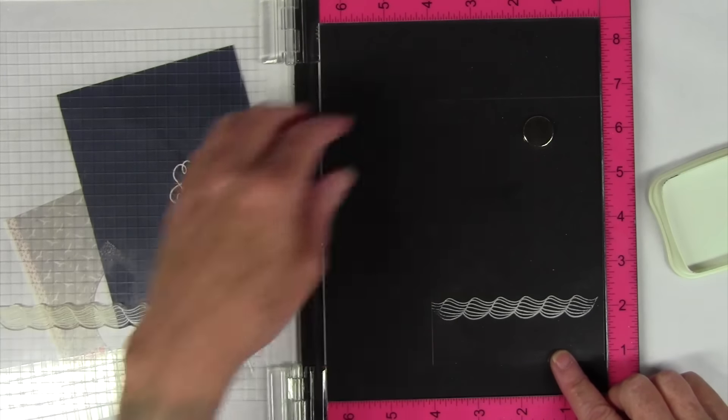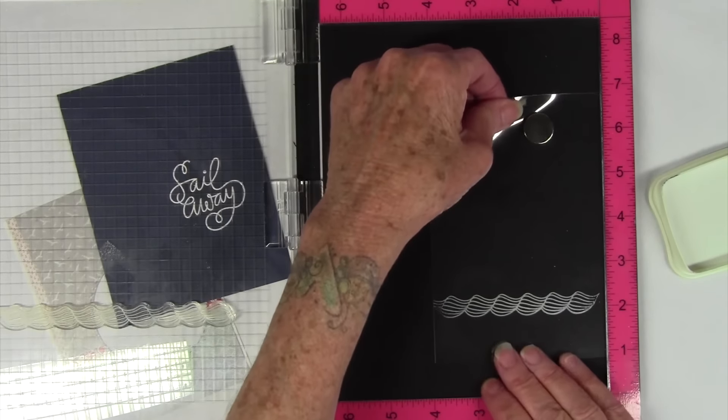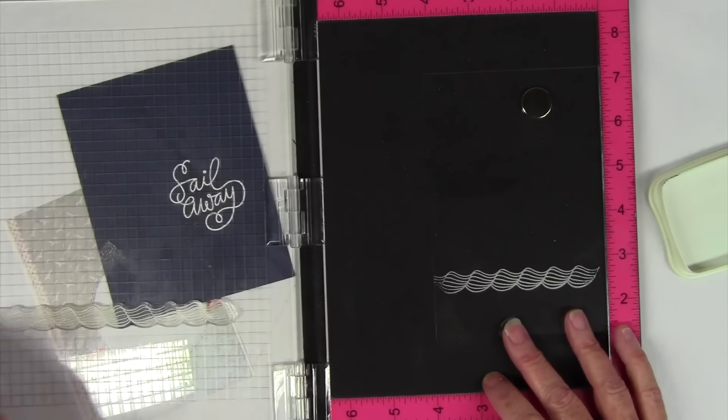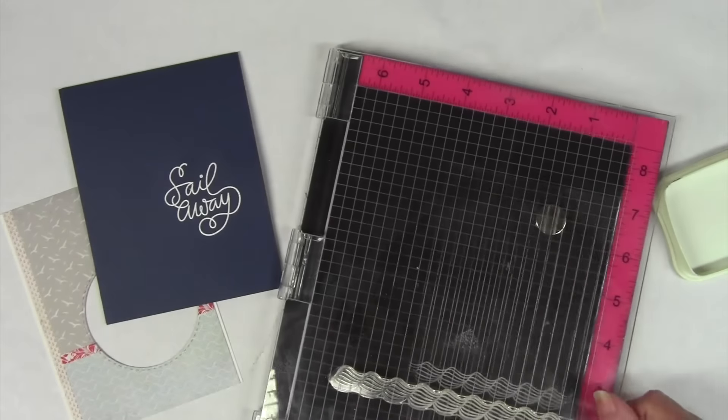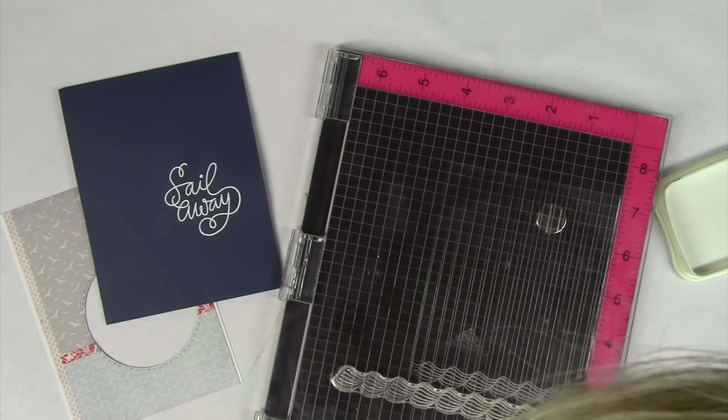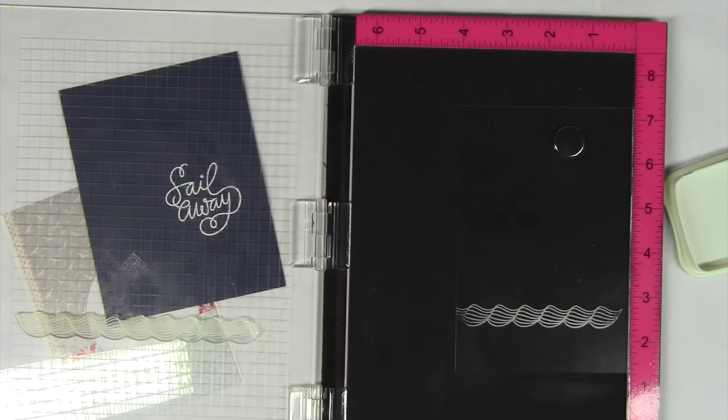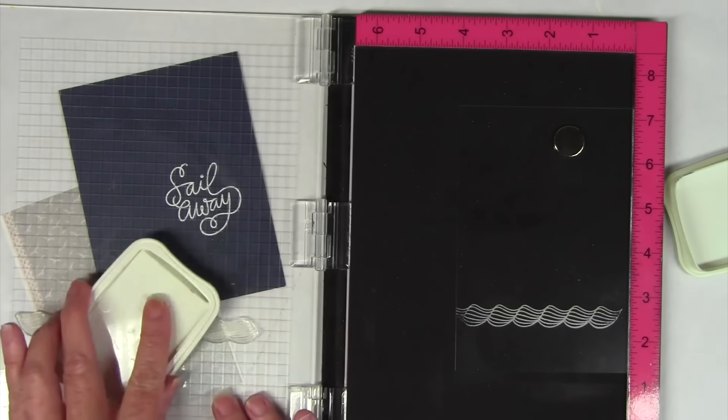Next I'm going to position this just a little bit higher up so I can get a second set of waves and I'll peek through here to make sure that those are lined up to how I want them. Once they are I'll re-ink my stamp and stamp again.